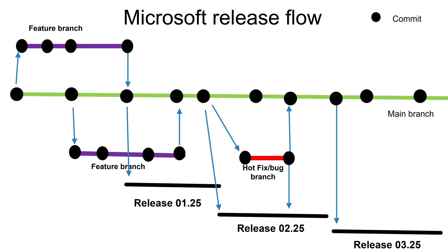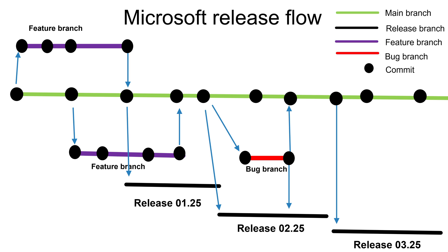Now assume you have 200 or 500 developers making hundreds of pull requests to the main branch — it will be too difficult to maintain. For larger teams, this is where Microsoft Release Flow comes into the picture. Microsoft itself uses this flow for developing their own products and software. In Microsoft Release Flow, you have the same main branch. Whenever you want to make changes, you create a feature branch, work on it, test it, and merge back to the master branch. But for deployment, they have a separate release branch created from the main branch.